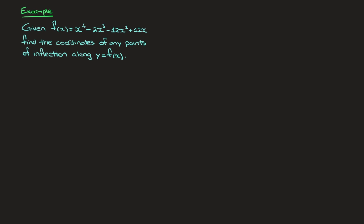We're given f of x, which equals x to the power of 4 minus 2x cubed minus 12x squared plus 12x, and we're told to find the coordinates of any points of inflection along the curve y equals f of x.